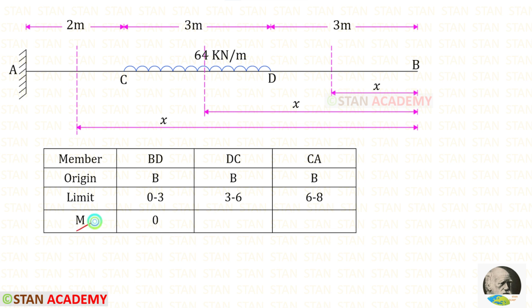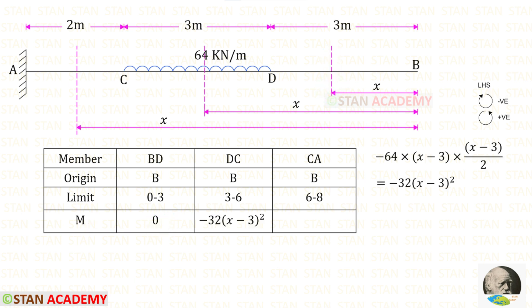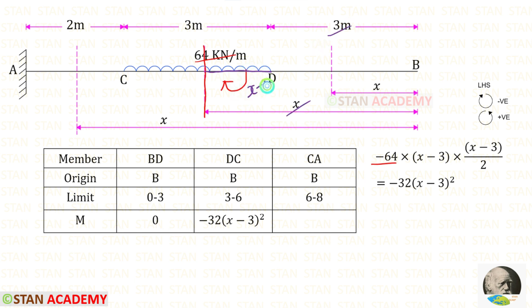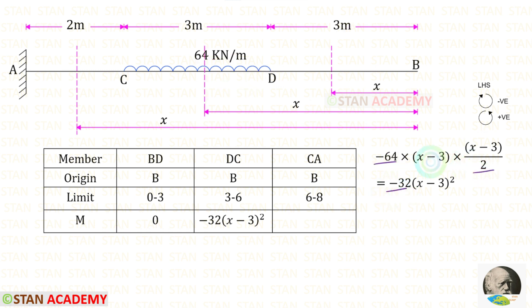For member BD, up to the section there is no load, so the moment M will be zero. For member DC, using the left-hand side rule where clockwise is negative and anti-clockwise is positive, we have UDL of 64 acting in the clockwise direction, so it will be negative. The relevant distance is (x minus 3), giving M = minus 32 times (x minus 3) squared.